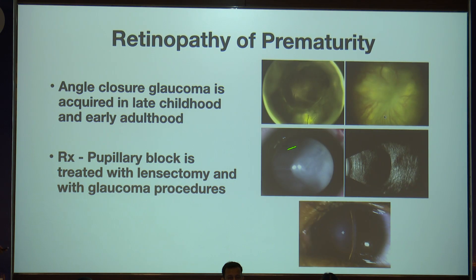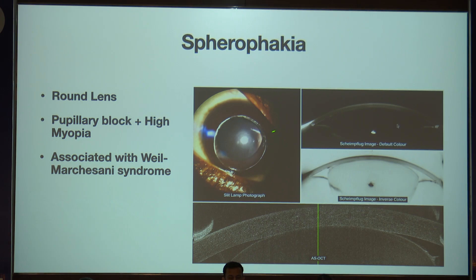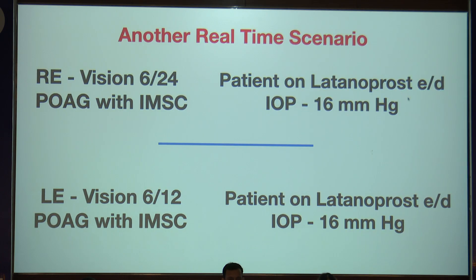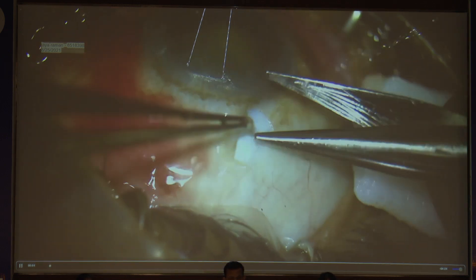Retinopathy of prematurity: stage 5 ROP shows the iris very close to the cornea on Vannas grading — pupillary block itself can be treated with lensectomy, but you also have to treat the retinal pathology. Spherophakia: the round lens can sometimes cause a pupillary block or get displaced into the anterior chamber. With high myopia, think of this — rule out Weill-Marchesani and Marfan syndrome.